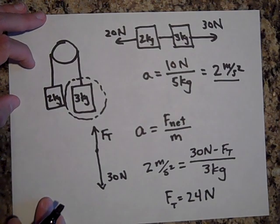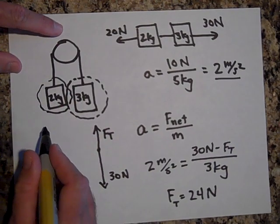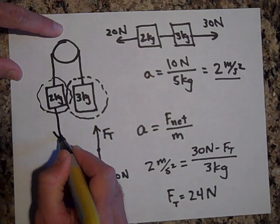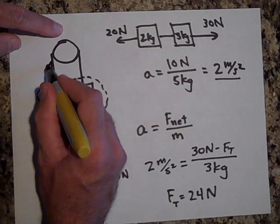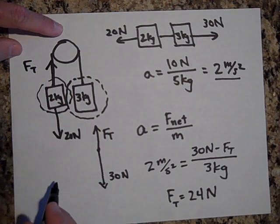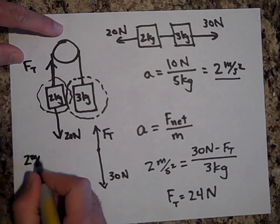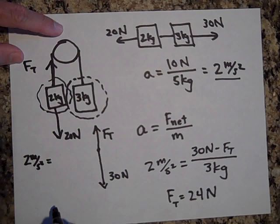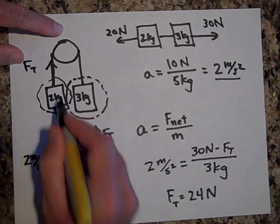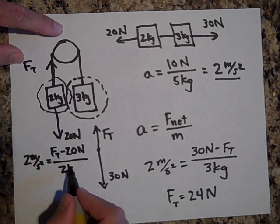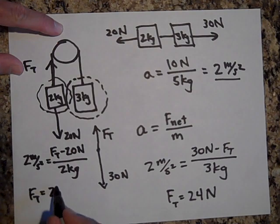See how that works? I could have used the two kilogram one. I would have gotten the same thing. The two kilogram one has 20 newtons down on it. And FT is up on that one as well. But in this case the FT is winning because this one is accelerating up. So I would say two meters per second squared is equal to the net force. That would be FT minus 20. The FT is winning for this guy, all over two kilograms, because I'm looking at the two. When I solve for that, lo and behold, I get 24 newtons.